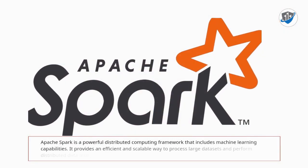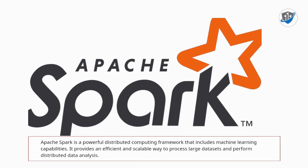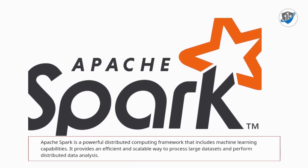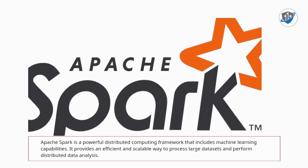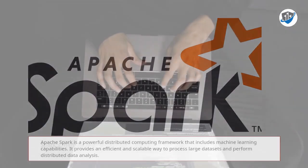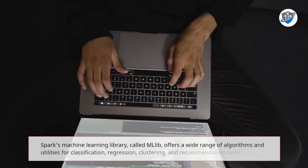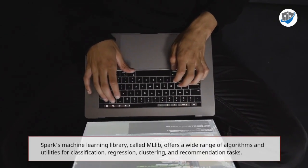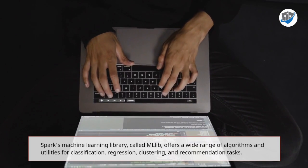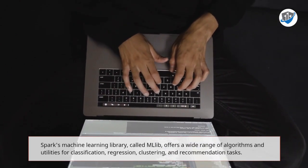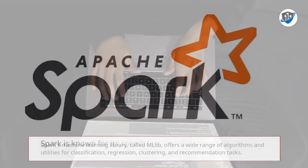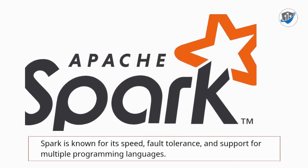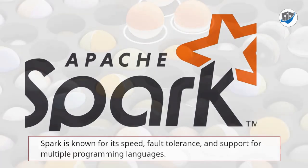Apache Spark is a powerful distributed computing framework that includes machine learning capabilities, providing an efficient and scalable way to process large datasets and perform distributed data analysis. Spark's machine learning library, called MLlib, offers a wide range of algorithms and utilities for classification, regression, clustering, and recommendation tasks. Spark is known for its speed, fault tolerance, and support for multiple programming languages.